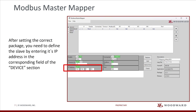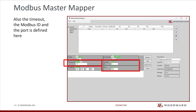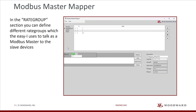After setting the correct package, you need to define the slave by entering its IP address in the corresponding field of the device section. If you need more detailed information on a single section, please check out the help menu. Also the timeout, the Modbus ID, and the port are defined here. In the rate group section, you can define different rate groups which the EasyEye uses to talk as a Modbus Master to the slave devices.